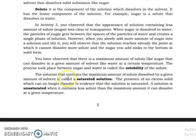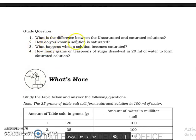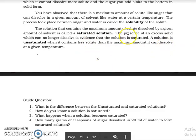Again, saturated solution, it's the solution that contains the maximum amount of solute dissolved by a given amount of solvent. Then unsaturated, when it contains less solute than the maximum amount it can dissolve at a given temperature. So what is the difference between the unsaturated and saturated solution? Saturated solution contains the maximum amount of solute dissolved by a given amount of solvent, while unsaturated solution contains less solute than the maximum amount it can dissolve at a given temperature. So how do you know a solution is saturated? It's the presence of an excess solute. So if there's an excess solute, that's already saturated. So what happens when a solution becomes saturated? It will no longer dissolve, it will no longer dissolve a solute.